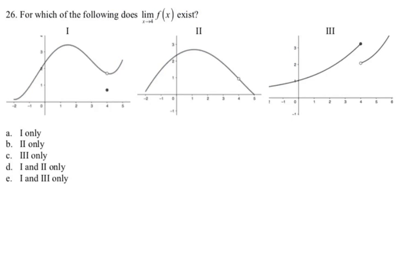For which of the following does the limit as x approaches 4 of f of x exist? It would be really weird if this question was about any other value, since across all three graphs, 4 is the only interesting value. We need the limit from the left and the limit from the right. So tracing from the left, you're approaching 2, and from the right, you're also approaching 2. Since you're approaching the same value, that limit exists. So number 1 exists, which means B and C from a test-taking standpoint cannot be the answer.